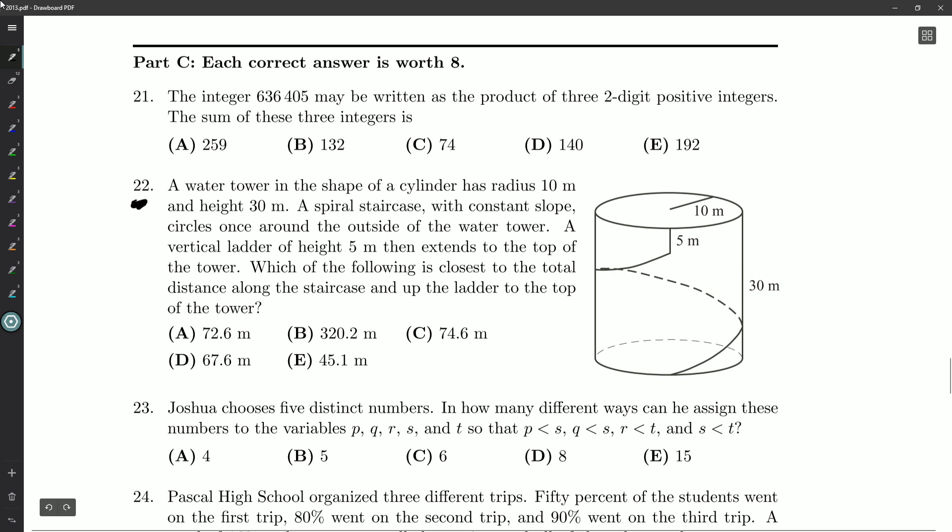A water tower in the shape of a cylinder has a radius of 10 meters and a height of 30 meters. A spiral staircase with constant slope circles once around the outside of the tower. A vertical ladder with height of 5 meters then extends to the top of the tower. So you go around the spiral staircase, and then you go up a ladder, and you're at the top of the tower.